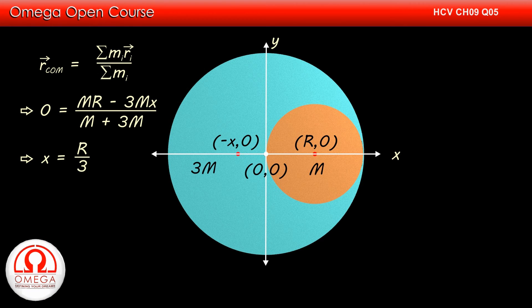Simplifying, we get x equals R by 3. Thus, center of mass of the residual portion is at distance R by 3 towards right from the center of the disk. This is our answer.